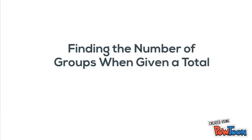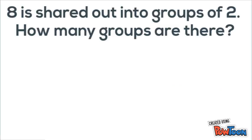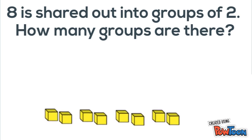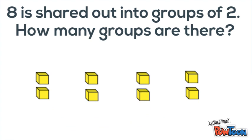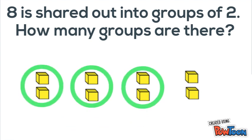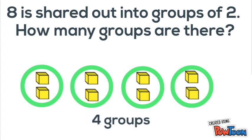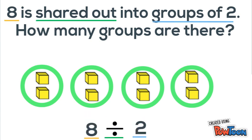All right, now we're going to do the opposite and we're going to find the number of groups when given the total. Eight is shared out into groups of two. How many groups are there? Notice we're not asked to find how many all together — we're asked how many groups are there. So first we're told eight is what's shared out, that means we have to start with eight. So then we take these eight and we put them into groups of two. When we do that we see that it makes four groups. These are represented by division. So we say eight divided by two is the same as saying eight shared out into two groups. So we know eight divided by two equals four.